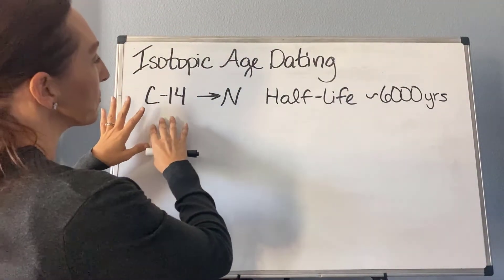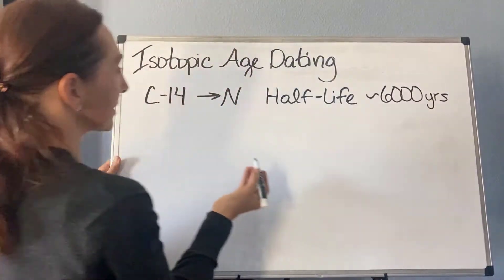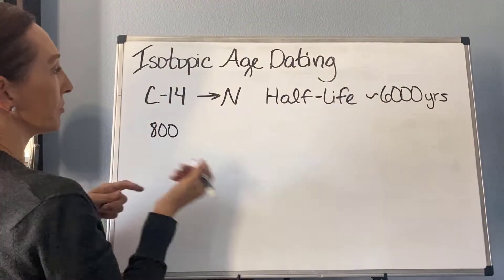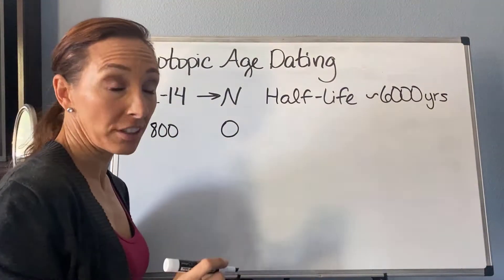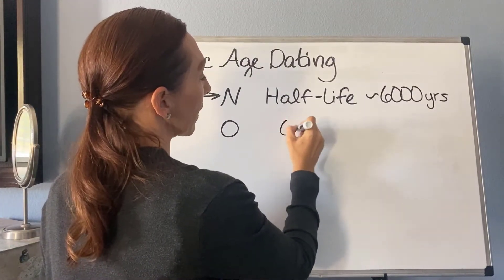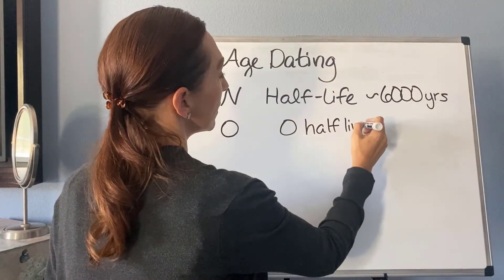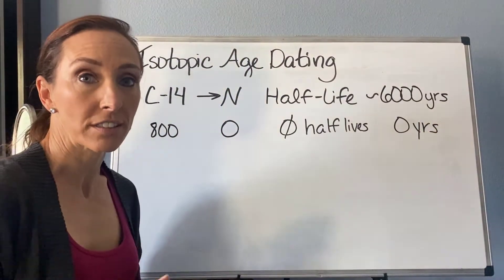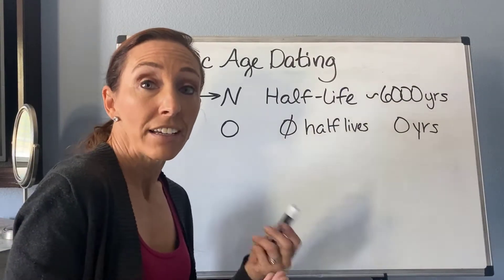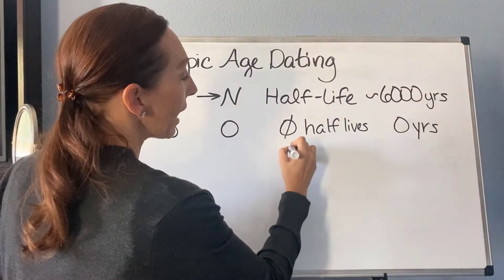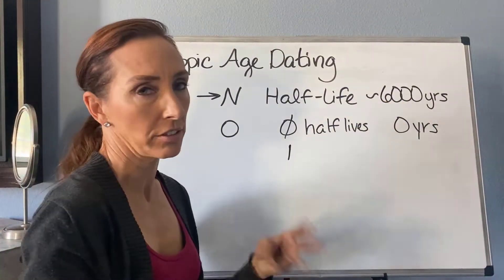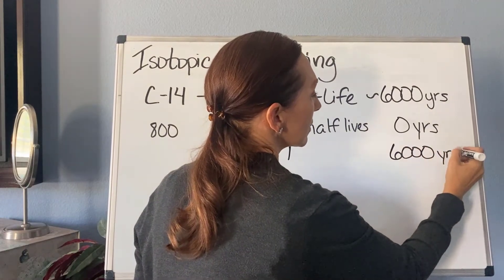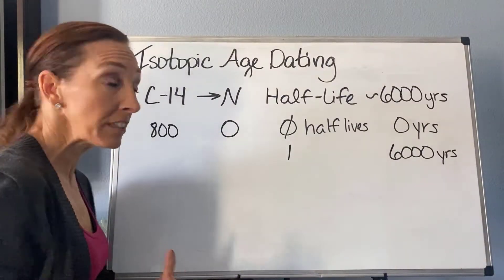Now let's look at what that looks like with actual numbers. If carbon is going to nitrogen and the half-life is every 6,000 years, let's say I start with 800 atoms of carbon-14 and zero nitrogens. After zero half-lives — which is zero years — I have an 800-to-zero split, just like at the very start I had 16 M&Ms in my tray and none in my belly. After one half-life, which I'll estimate as 6,000 years — it's actually in the high 5,000s, but easier for the math —